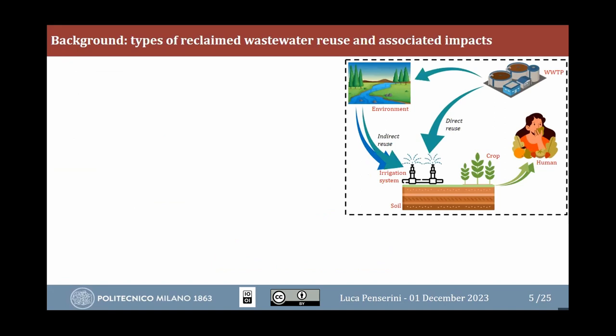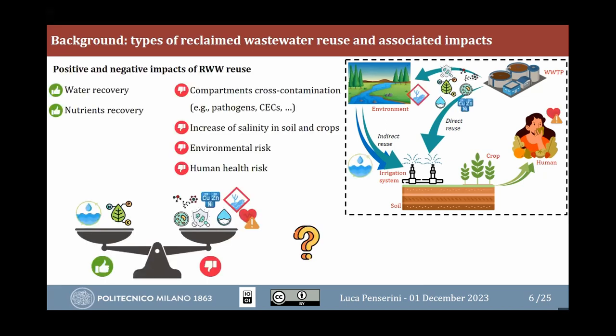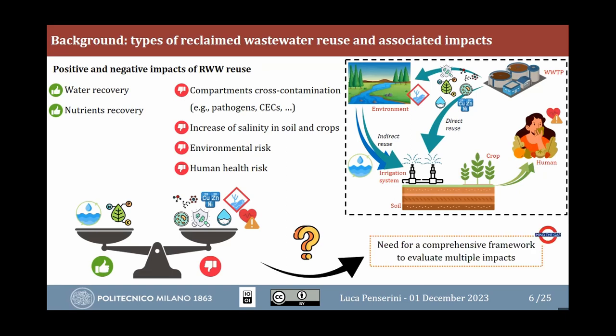It is important to specify the type of reuse. Direct reuse means water goes straight from the wastewater treatment plant to the crop; indirect reuse — which is most common, at least in Italy — means water is discharged into the environment and then drawn from surface water to irrigate crops. Both practices bring impacts: positive ones like water and nutrient recovery, but also negative ones such as compartment cross-contamination, salinization of soil and crops, and human and environmental health risks. So it is interesting to develop a comprehensive framework that can simultaneously evaluate all these impacts.